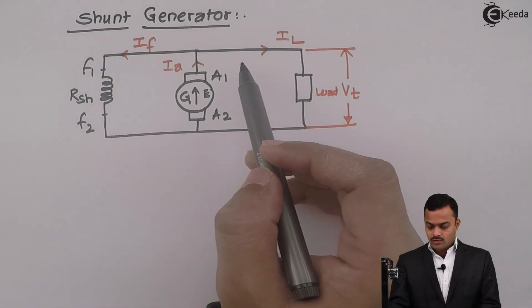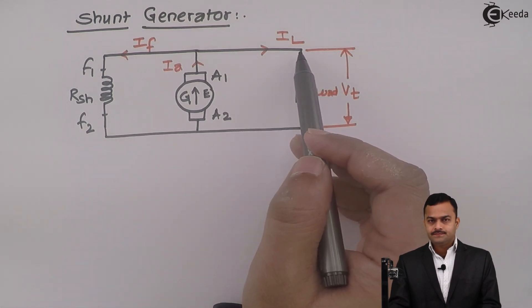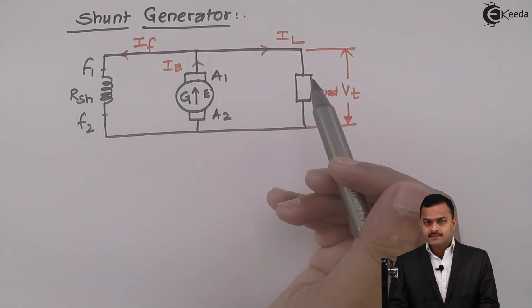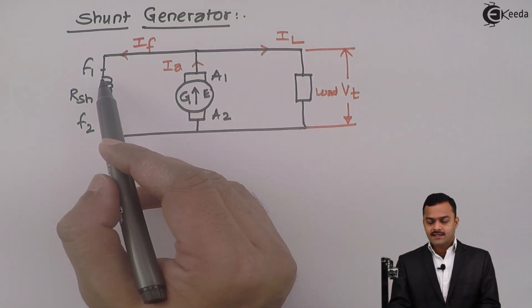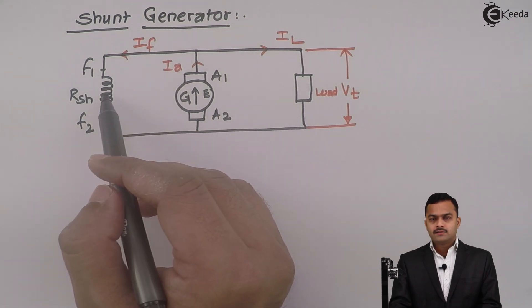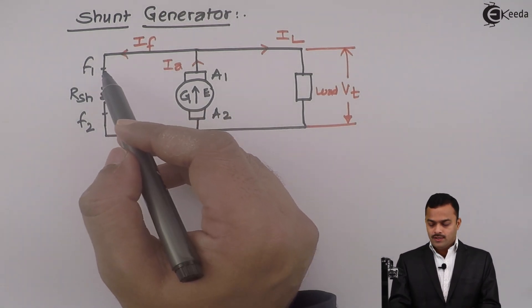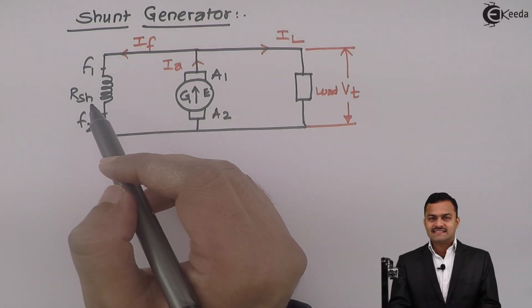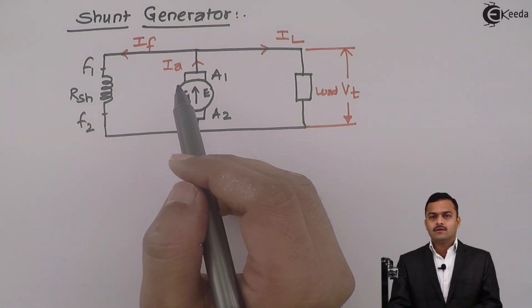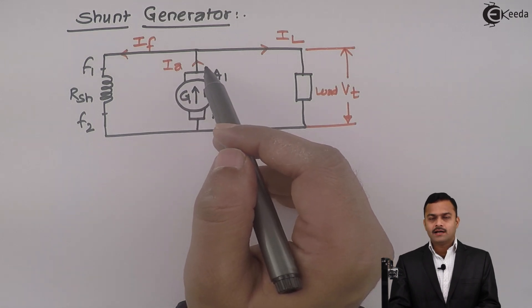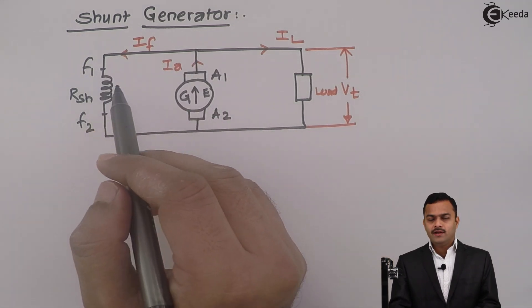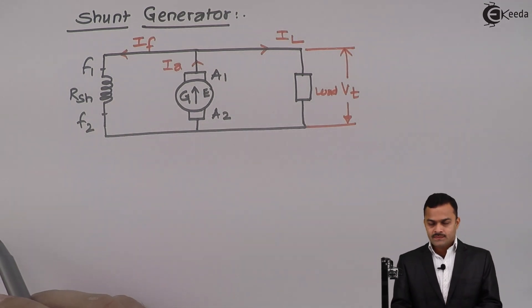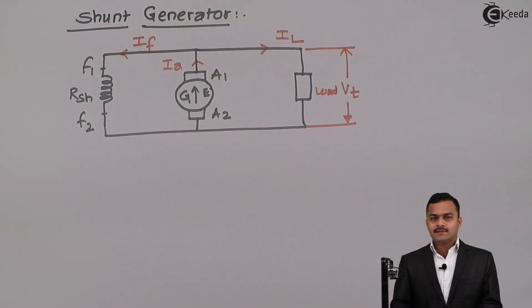Since it is parallel, whatever terminal voltage or EMF is induced will drive field current IF here. We might be thinking: if voltage is not induced, how can this be excited? First of all, the residual magnetic flux that is there will come into play at the initial stage. And once the motor starts rotating, it will develop an EMF which will feed this field winding for production of more flux. So let's write current and voltage equations for this.